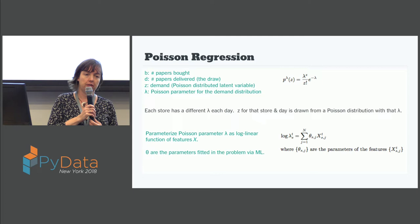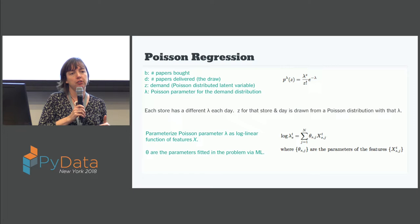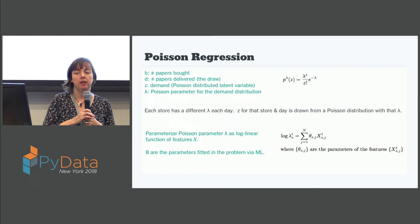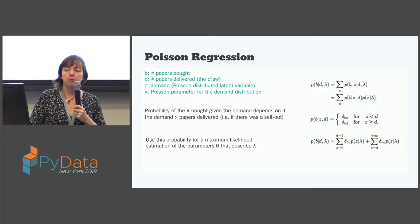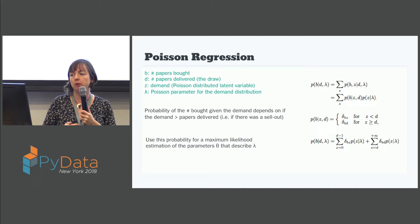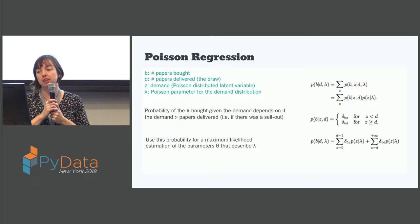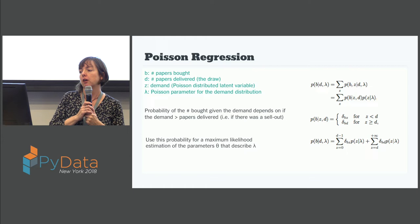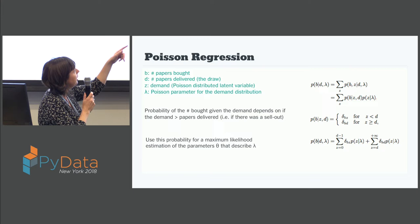We want to parameterize lambda in terms of our features x, where lambda is parameterized in terms of weights theta and features x. Since we're doing a time series, the features x are just previous sales — last week, last year, whatever — and theta are the parameters we're fitting for in the minimization. We need to understand what the probability distribution of our data is: the probability of the papers that we see bought, given the papers that we deliver and this lambda expected demand. The first line on the right-hand side is putting in Z the observed demand and marginalizing over it.